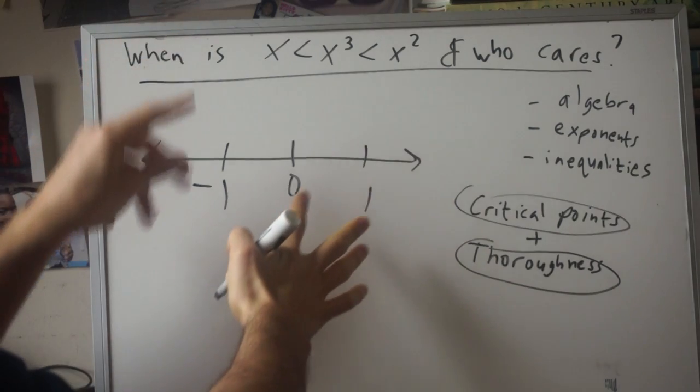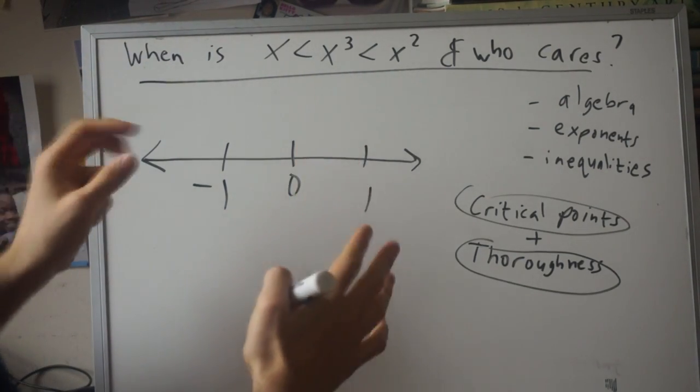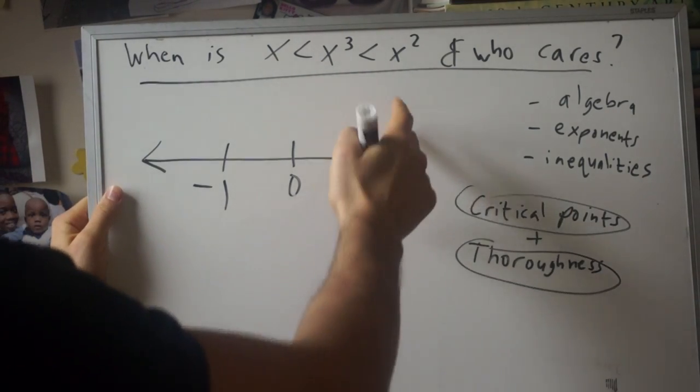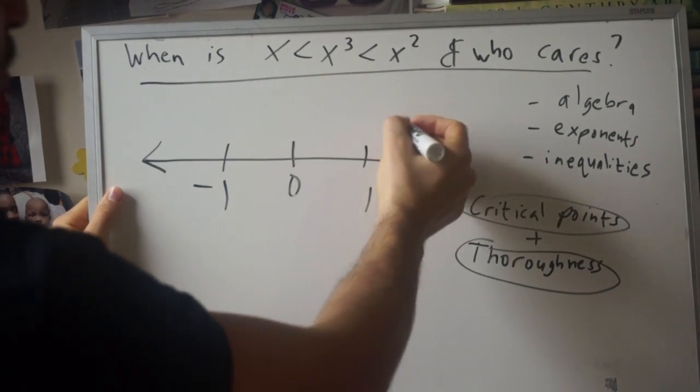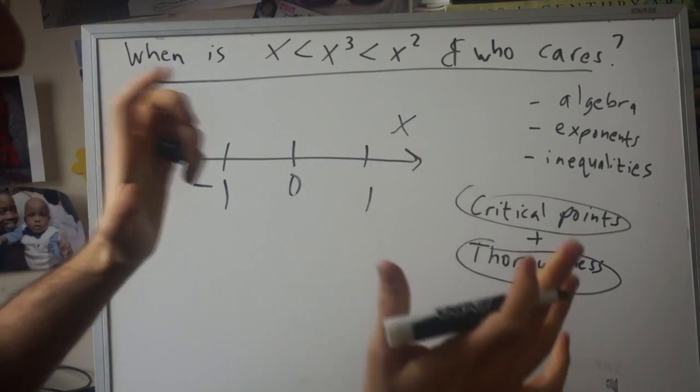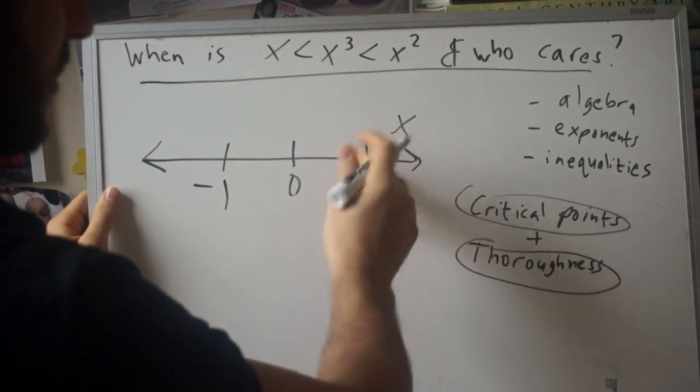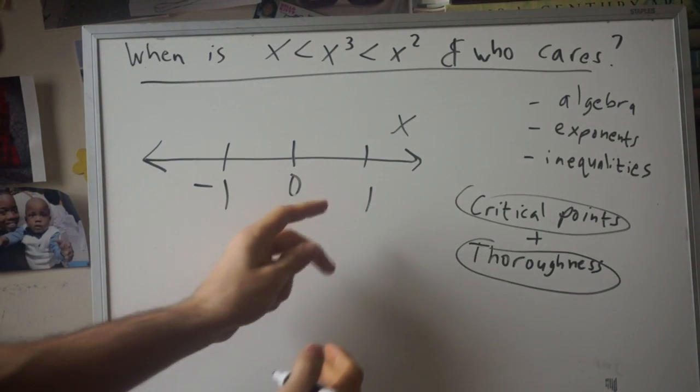Get your number line, realize what should be your critical points—these might vary depending on the problem, but oftentimes they'll be these—and now we're going to thoroughly check every interval. So let's pick five. We already saw that five doesn't work, so that sort of intuitively tells us that no other number in this interval will work. So like this whole interval is garbage.